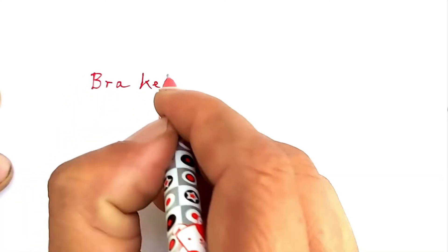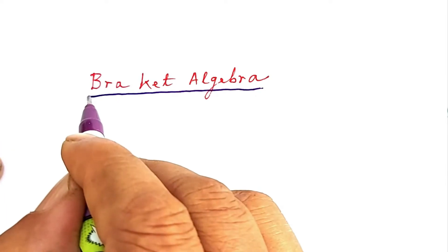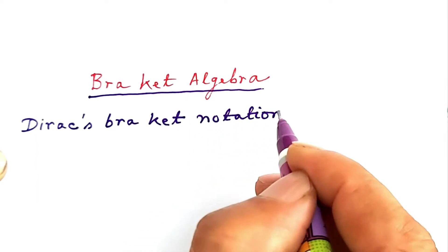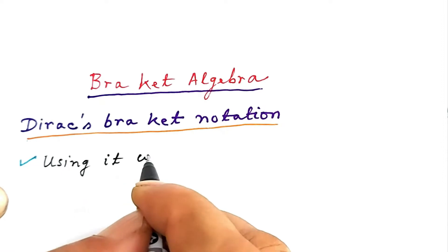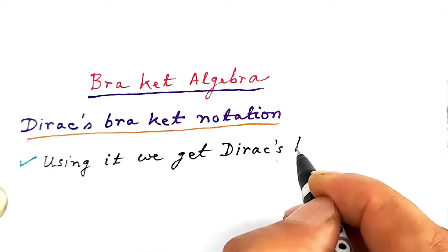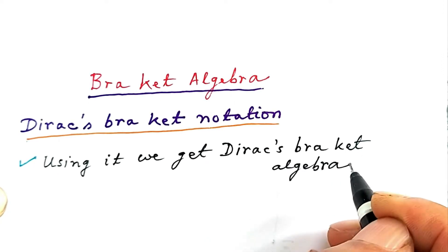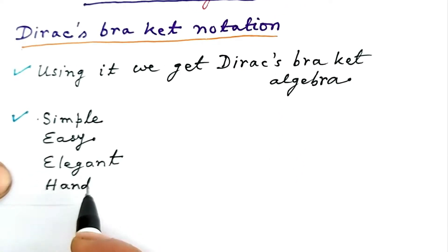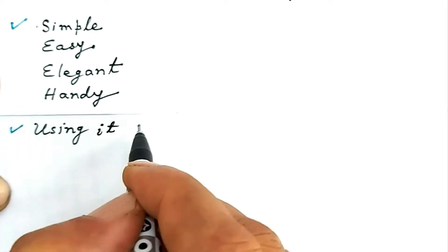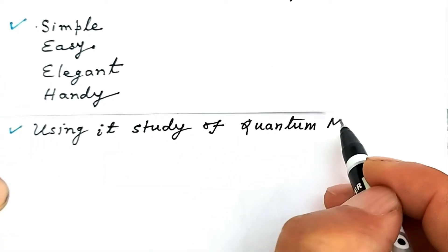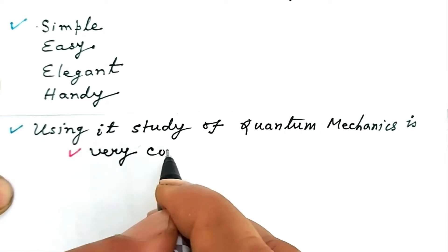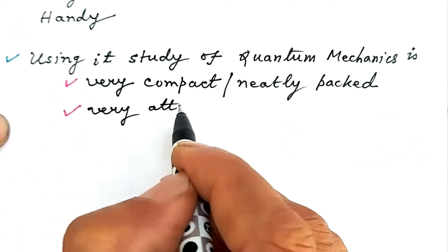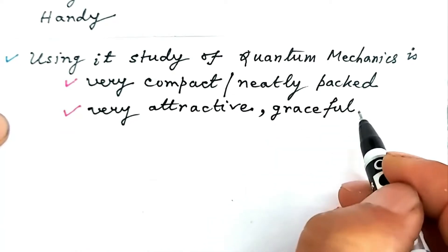This is the first class of the series of classes on bracket algebra. Dirac proposed a notation referred to as Dirac's bracket notation. Using this notation, we get Dirac's bracket algebra. This algebra is simple, easy, elegant and handy. If we use Dirac's notation or Dirac's bracket algebra, the study of quantum mechanics becomes very compact and neatly packed. The presentation of quantum mechanics becomes very attractive, graceful and stylish.